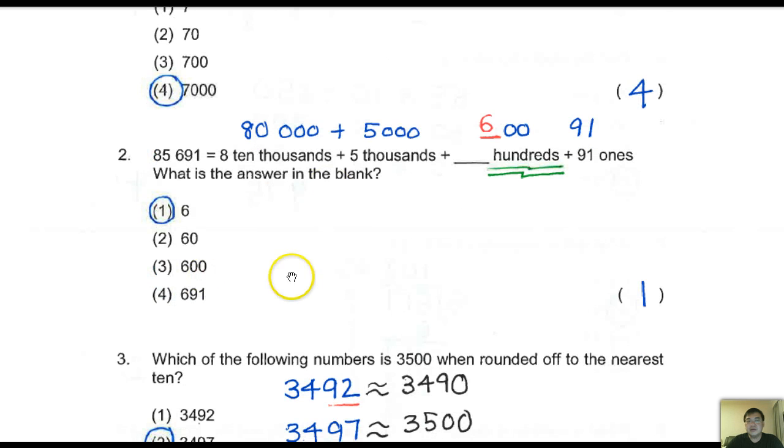Now, 85691 is equal to 8 ten thousands. All you need to do is write out what you know from here, from words into numeric form. In the numbers, write it out. You know this is at the 80,000 place. The next one is at the 5,000 place, at the thousands place.